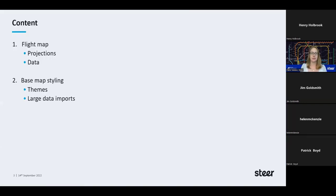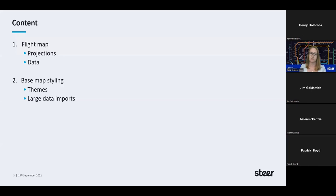The way I've set this up is as a presentation — about 30 slides, split into two sections. The first section talks about the Azimuthal Equidistant Map of Doha, covering projections, how to change a projection, and the data used to create it. The second section is about basemap styling: using themes in Map Publisher, styling themes, geopackages, and importing large data. I'll be flitting between the presentation and live demos in Illustrator and QGIS.